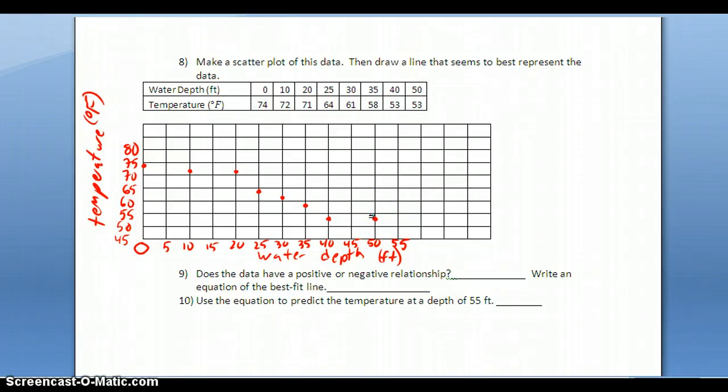We're trying to find a linear relationship here. As with most real data, it doesn't form a completely straight line, but you can see there is a relationship. Because the slope is going down, there's a negative relationship. This means as the water depth gets deeper, the temperature goes down, and vice versa.